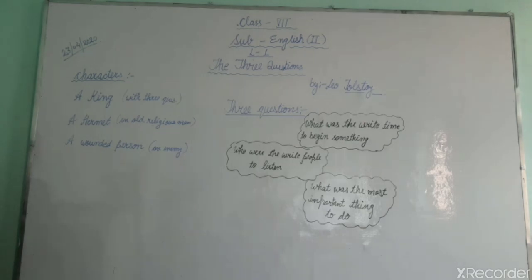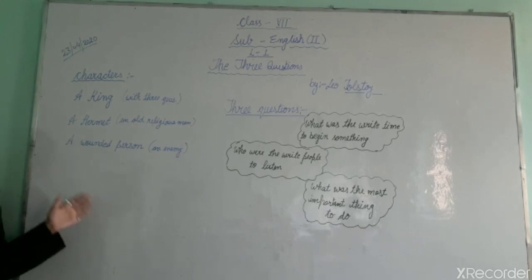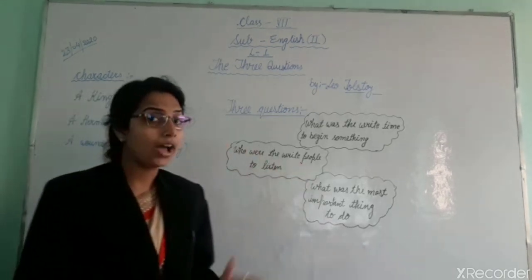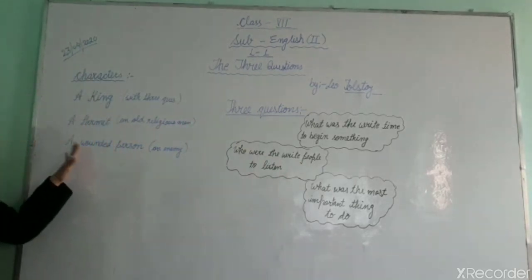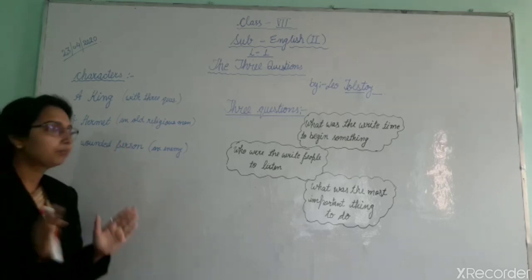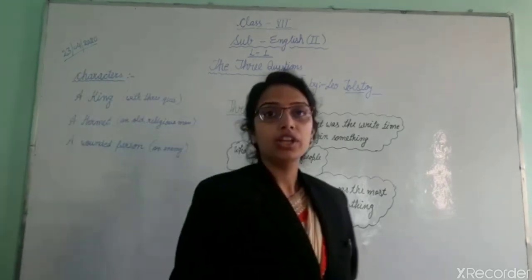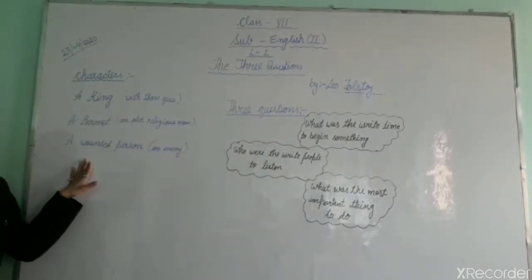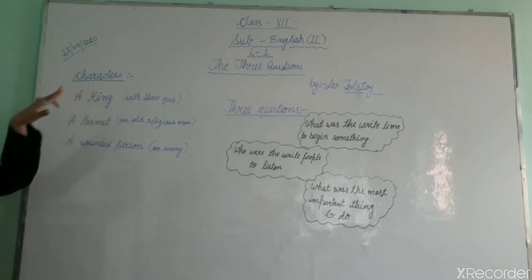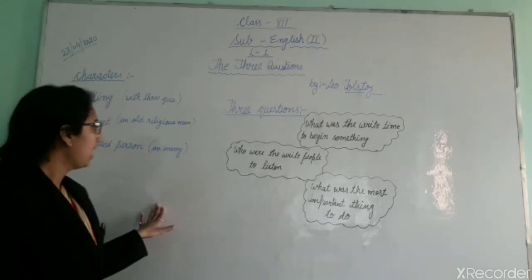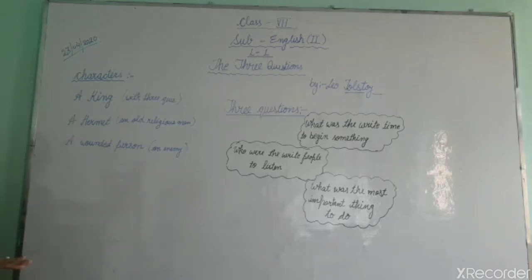The next day, the wounded man woke and asked the king for his forgiveness. The wounded person asked the king for his forgiveness. Why was he asking? Because actually, the wounded person was the enemy of the king. Why was he the enemy? Because at a time, the king had captured his property and now he came back to take revenge. But now, the wounded person was saved by the king. That is why he left the thought of taking revenge and asked to serve the king.